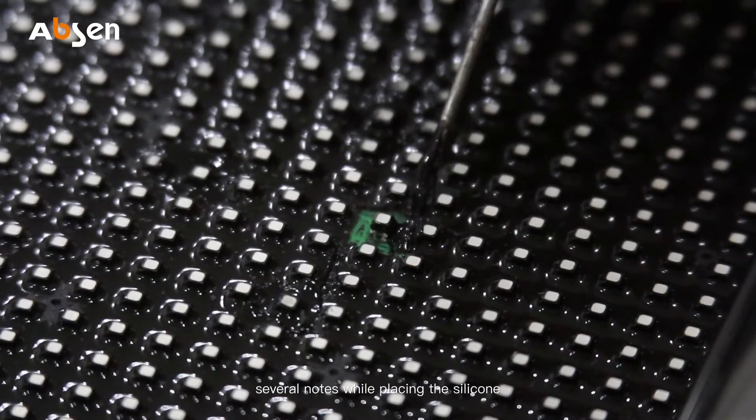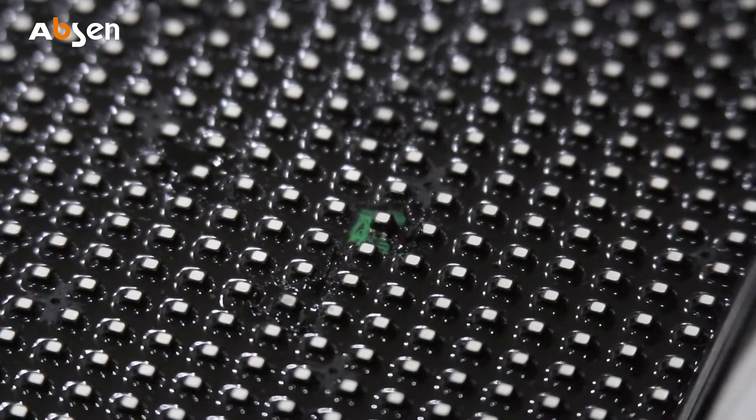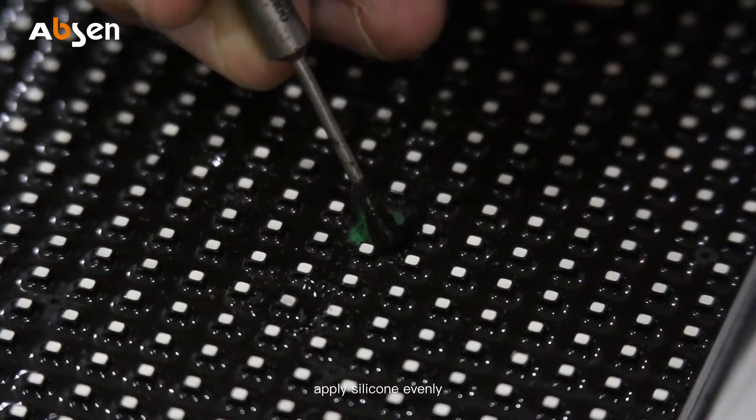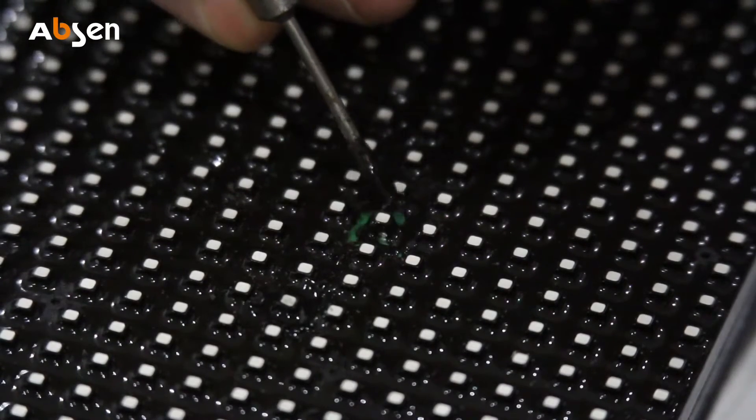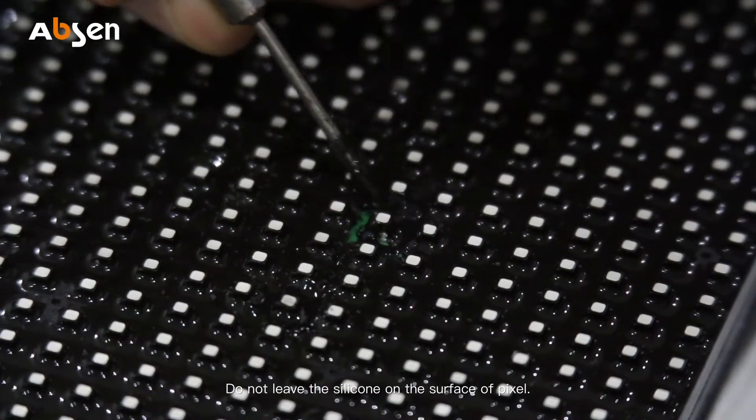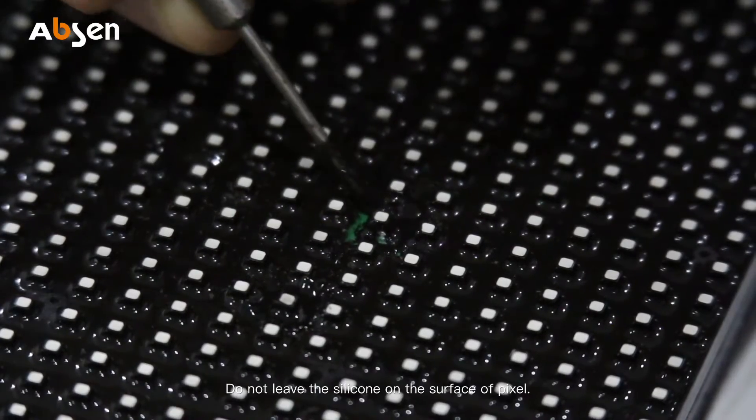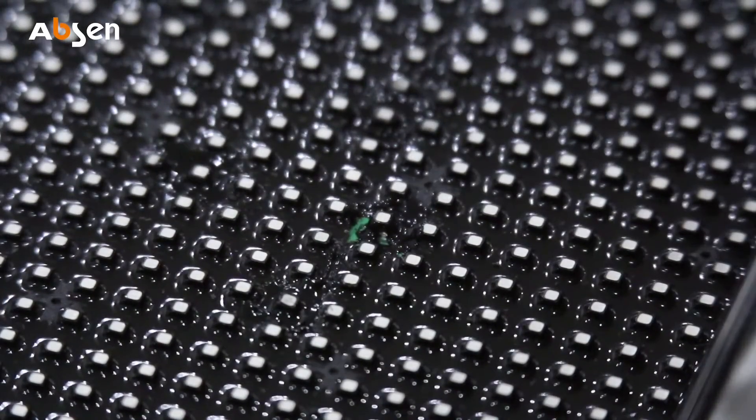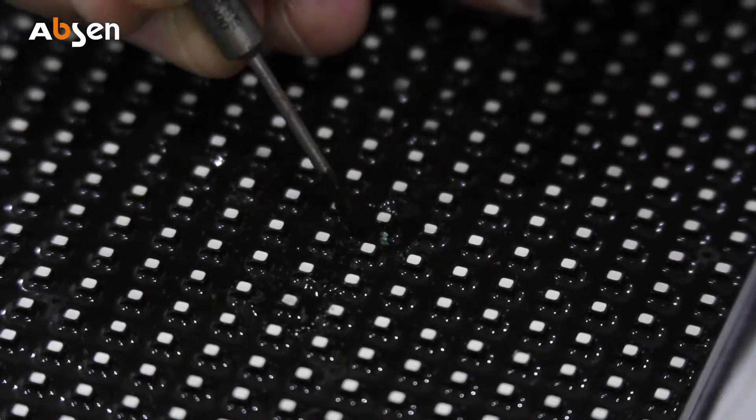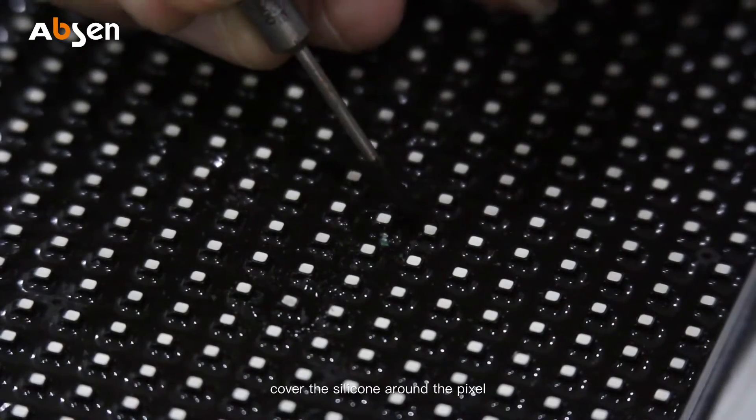Several notes while placing the silicone: Apply silicone evenly. Do not leave the silicone on the surface of the pixel. Cover the silicone around the pixel.